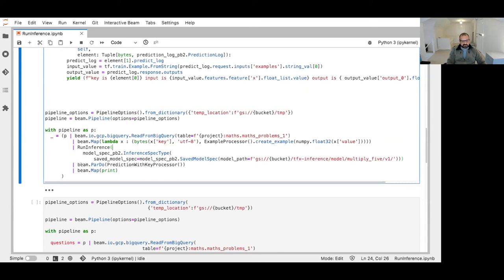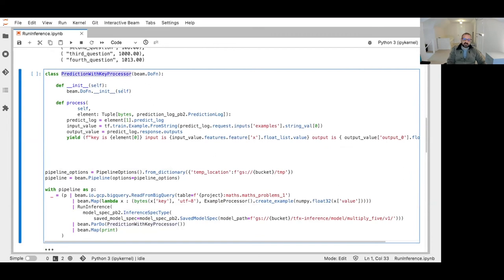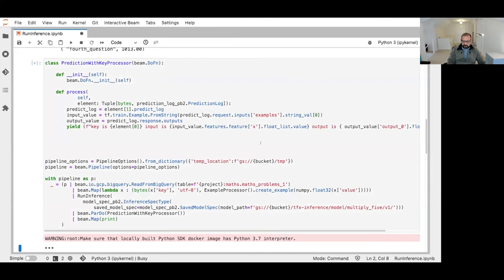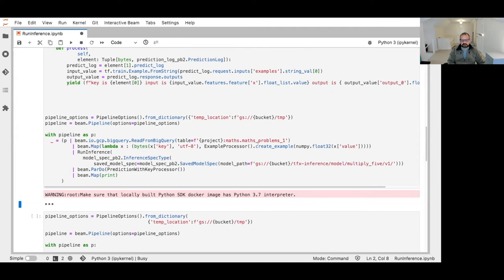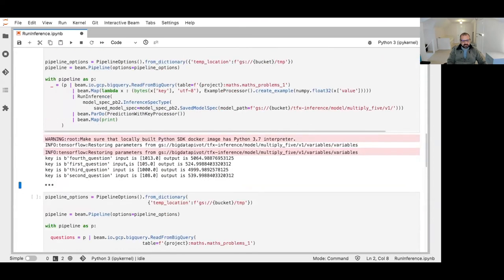It's going to do all the work of running the prediction for us and give us an output. Now, the output of this is a P collection of predictions, which I am then sending to a DoFn. And this DoFn is really here just to pretty print the output. The run inference transform has a stable output, which is in the form of a prediction log. And this is a protobuf that I examine and create a nice string to output in my final map, which is just simply print within Beam. So I'm just going to run this, it may take a few seconds while it goes and gets the information from BigQuery, makes it available to the model and runs it. Okay, we can see that it restored the model parameters and stuff on this step. But here we actually see our output. So for the fourth question, the input was 1013. And the output is 5065 ignoring the rounding. So our little toy model isn't doing bad at the five times table.